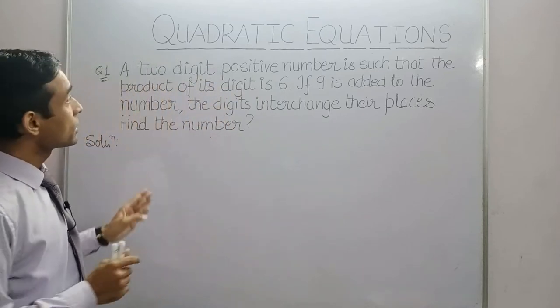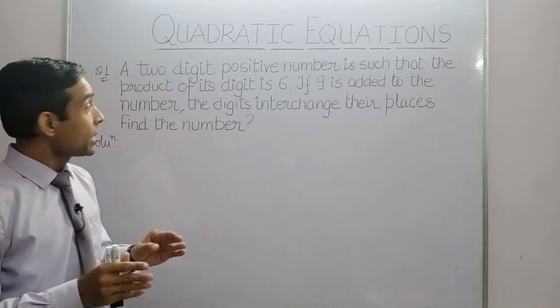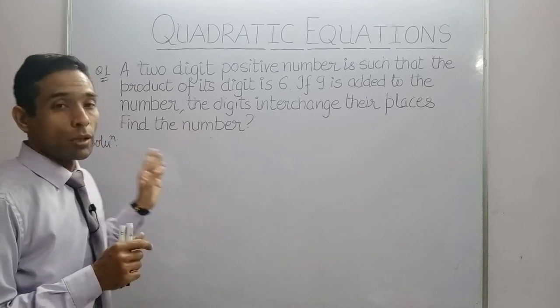Our first type of question is based on two-digit numbers. Here, it is given that a two-digit positive number is such that the product of its digits is 6. If 9 is added to the number, the digits interchange their places. Find the number.